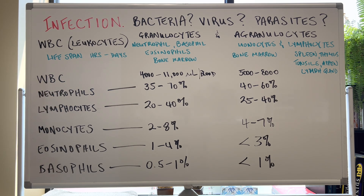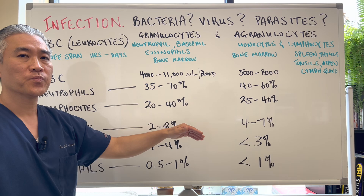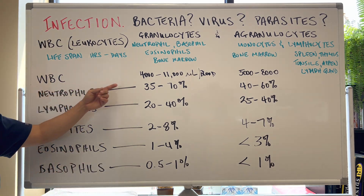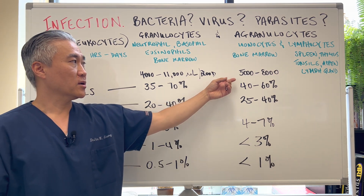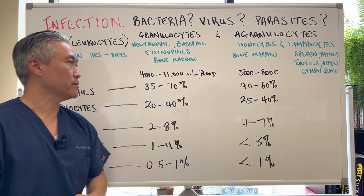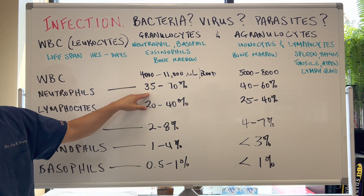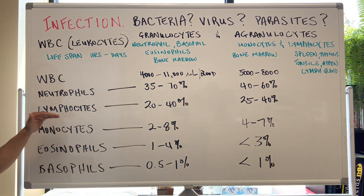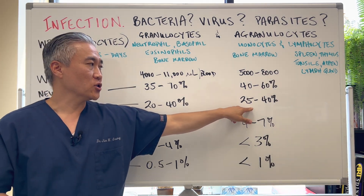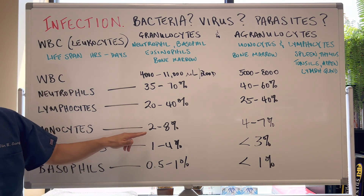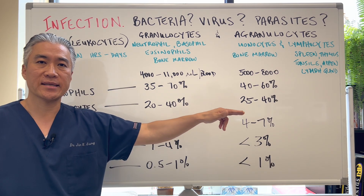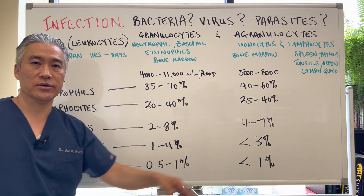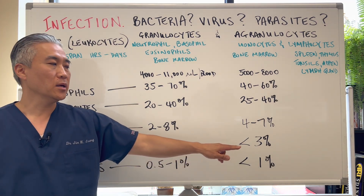We're going to give you conventional lab values and functional lab values — what I consider optimal. White blood cell: 4,000–11,000 conventional; functionally 5,000–8,000. Neutrophils: 35%–70% conventional; functionally 40%–60%. Lymphocytes: 20%–40% conventional; functionally 25%–40%. Monocytes: 2%–8% conventional; functionally 4%–7%. Eosinophils: 1%–4% conventional; below 3% functionally. Basophils: 0.5%–1% conventional; below 1% functionally.